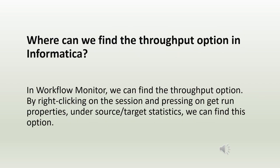Where can we find the throughput option in Informatica? In Workflow Monitor, we can find the throughput option by right-clicking on a session and selecting 'Get Run Properties.' Under source and target statistics, we can find this option. Workflow Monitor is one of the windows in Informatica PowerCenter.